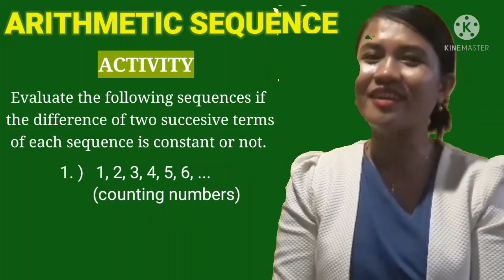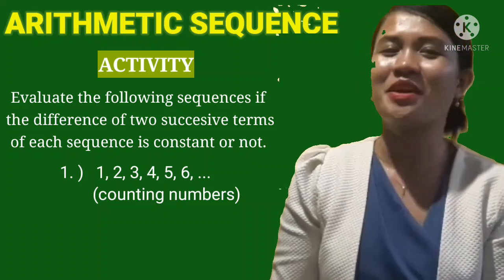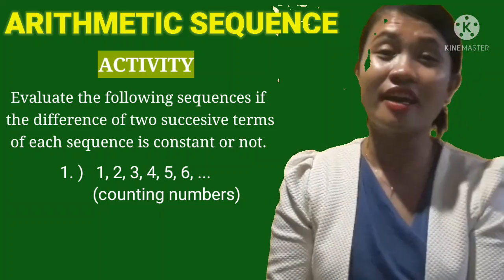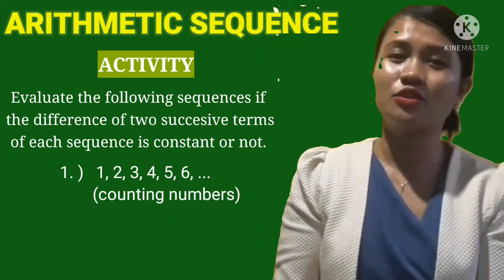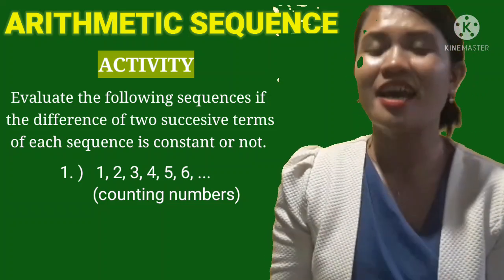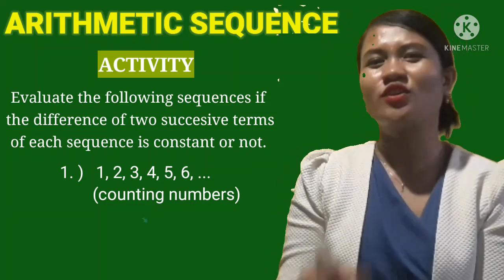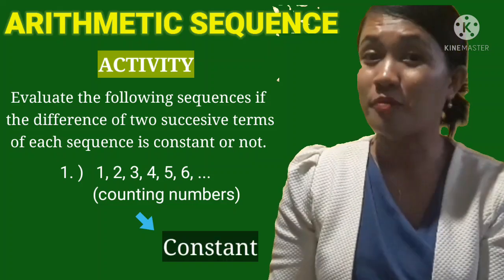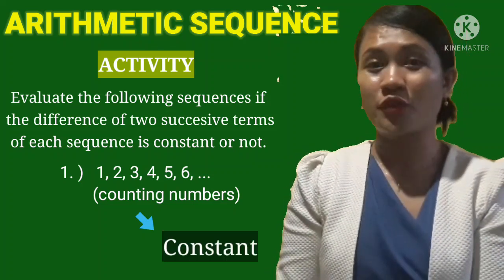it's very familiar that is counting numbers. So we have 1, 2, 3, 4, 5, 6, and so on and so forth. So what do you think? The difference of the two successive terms are constant? Yes, absolutely yes, because 2 minus 1 is 1, 3 minus 2 is 1, 4 minus 3 is 1, 5 minus 4 is 1.